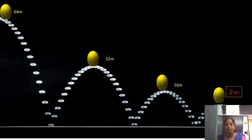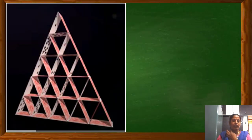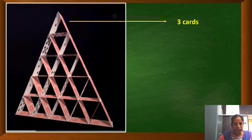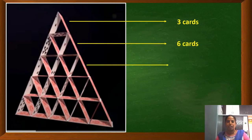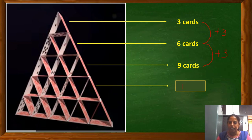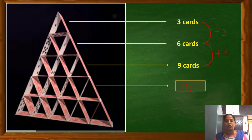Let us take one more example — the card house game. To build this card house, the top step uses 3 cards, below that 6 cards, below that 9 cards. Moving downward, the number of cards increases by plus 3 each time. So below the third step we need 9 + 3 = 12 cards, and the last step has 12 + 3 = 15 cards.